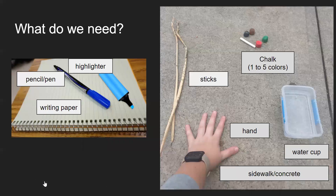To start our lesson, you're going to need writing paper, a pencil or pen, and a highlighter for the writing part. Once we're done with that part, we're going to head outside where you can get sticks, chalk in one to five colors to keep it simple — because the people who did the paintings did not have many resources. You'll also need your hand for hand painting and finger painting, a water cup so you can wet the chalk and make your own paint, and then a sidewalk or concrete area. I just used a sidewalk square for mine, but anywhere you can use the chalk will work.